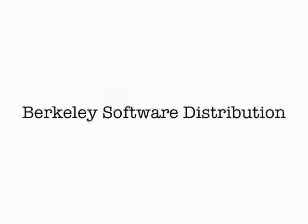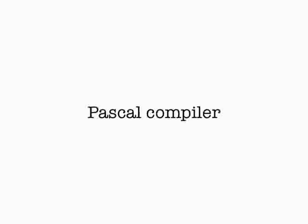By 1974, a gentleman named Bob Fabry, at the University of California Berkeley's computer science department, bought a copy of Unix for $99 to run on their PDP-11. By 1977, a graduate student named Bill Joy distributed the Berkeley Software Distribution as 1BSD — on tape media containing the Pascal compiler and the ex editor. By 1978, it was known as 2BSD with the C shell.